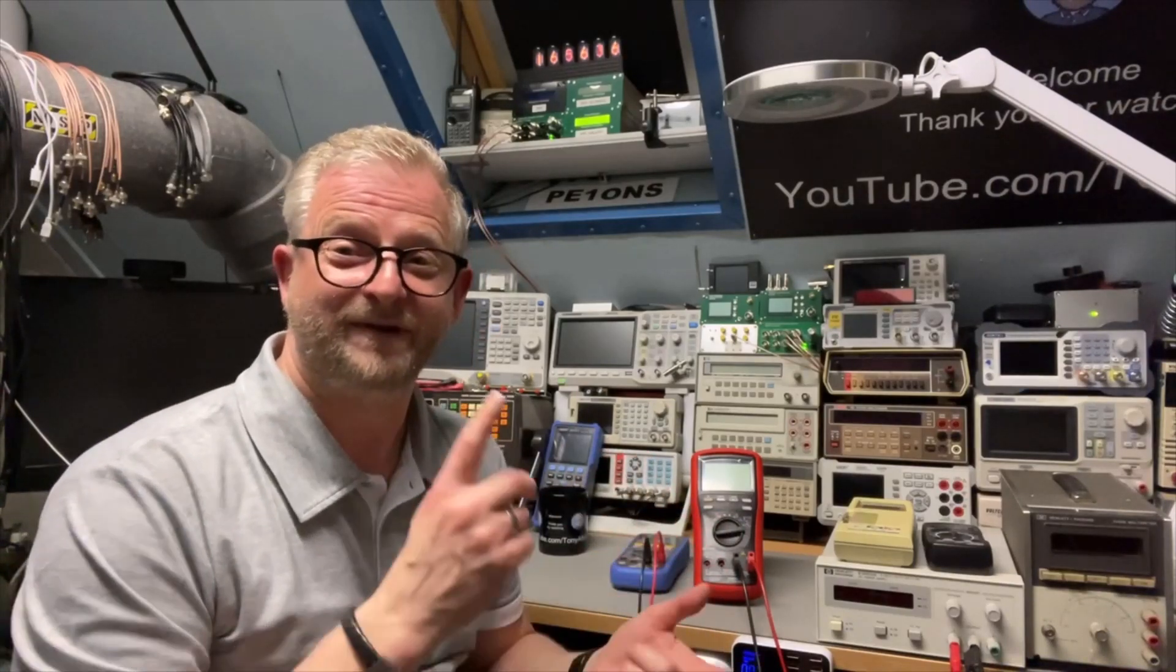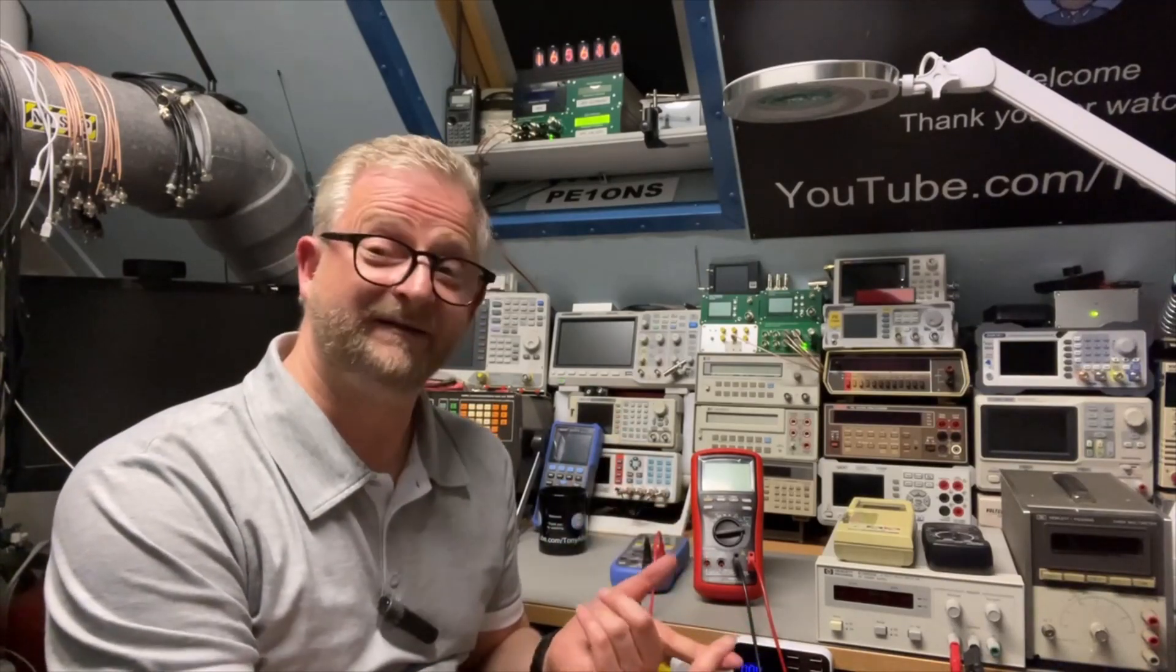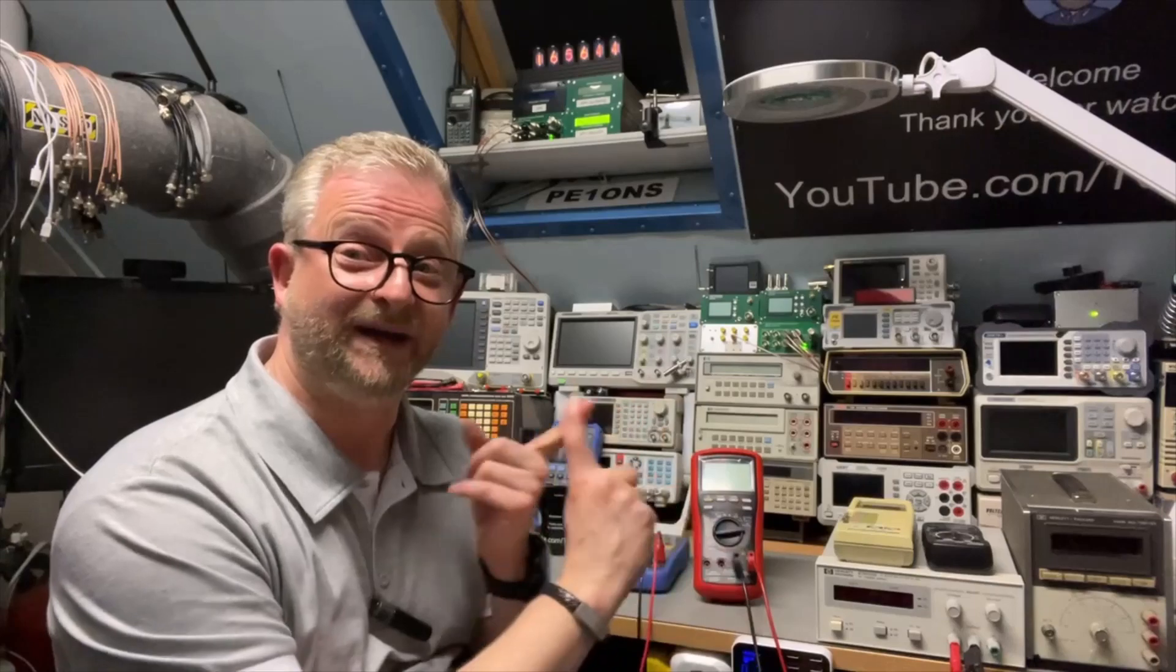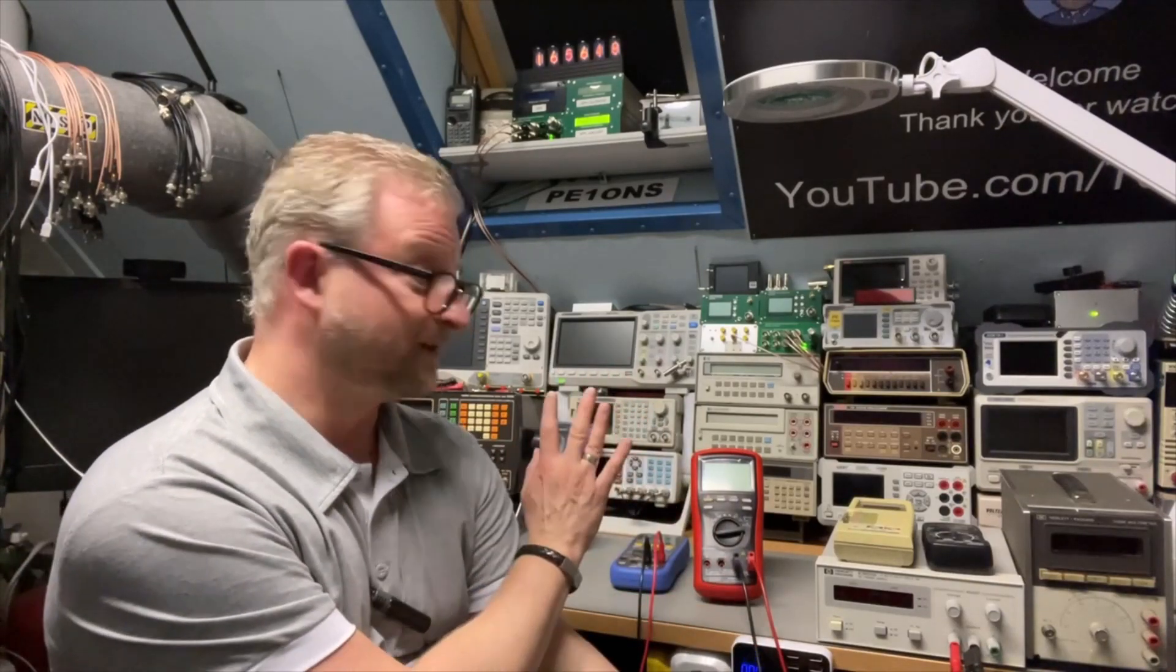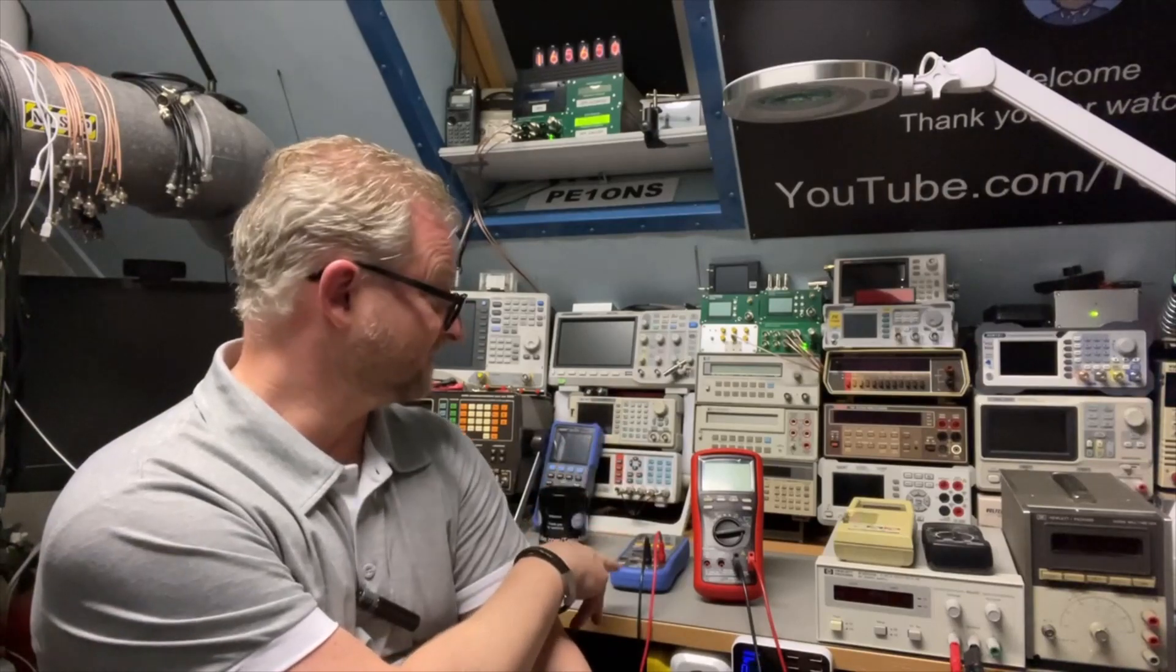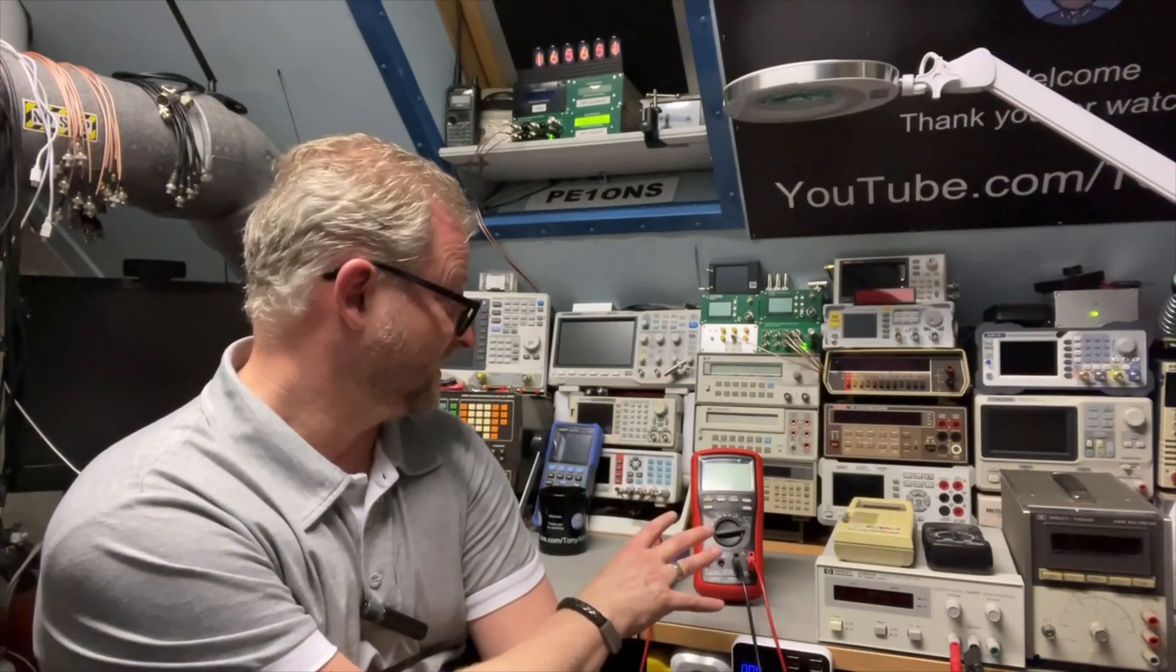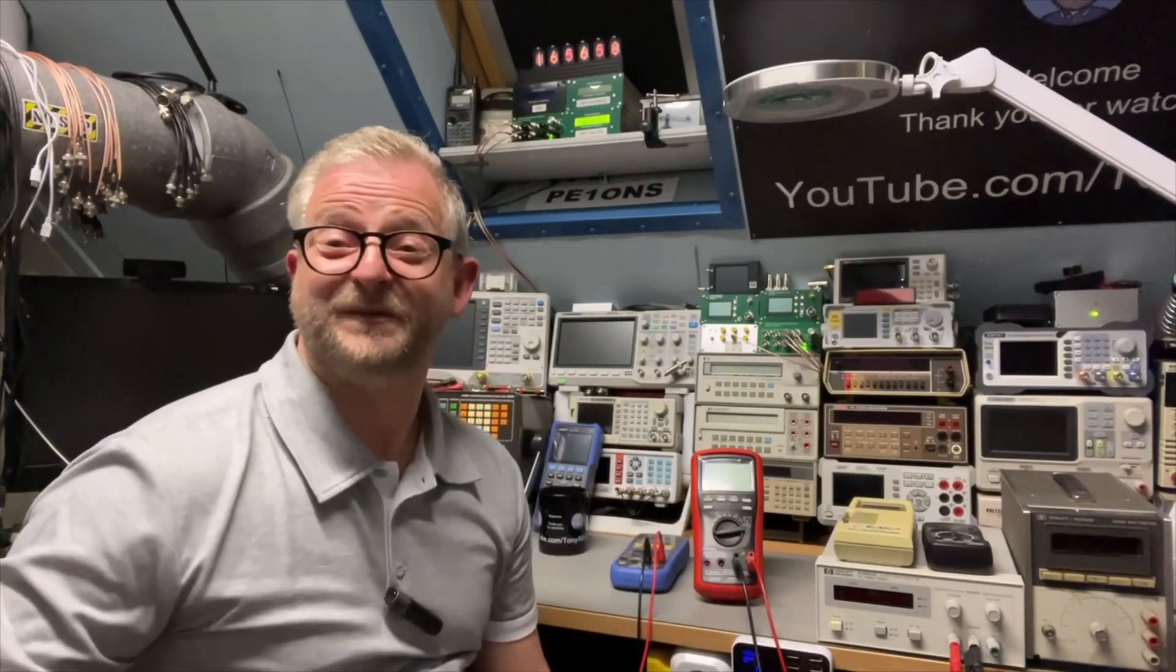So, now we're going to look, when we buy a multimeter, how many digits, well, I prefer four and a half or five and a half, but then it becomes very important how many counts, because you could see the real difference between 20,000 counts or 50,000 counts. And I think this was the nicest example to show you that. Thank you for watching, and I hope to see you next time.